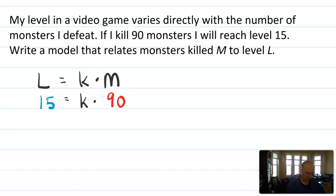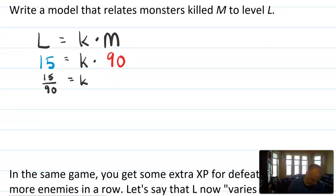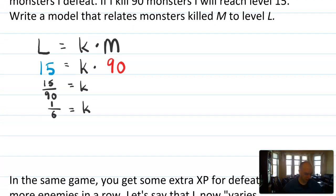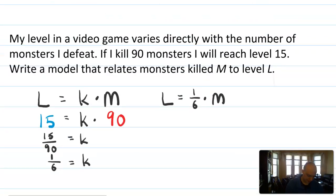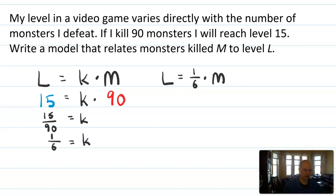Now to finish this model, we have to solve for the constant of proportionality. So we'll say that k is 15 divided by 90. Treat it like an equation. Solve on both sides. 15 over 90 reduces down as a fraction, so it turns out that our constant of proportionality is 1 sixth. So then I can write the model and say that my level will be 1 sixth times the number of monsters that I have killed. So that's one example of direct variation or direct proportionality.